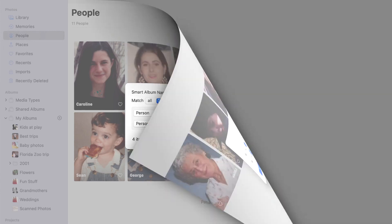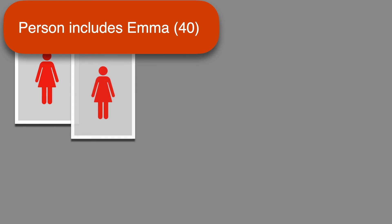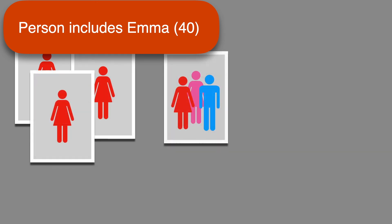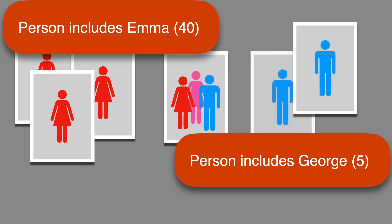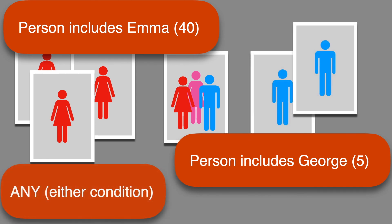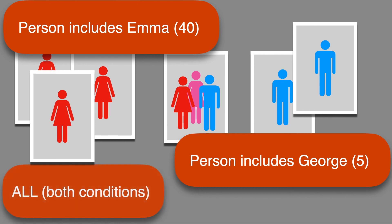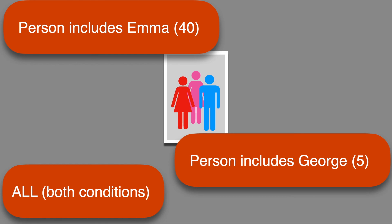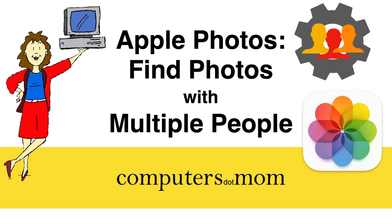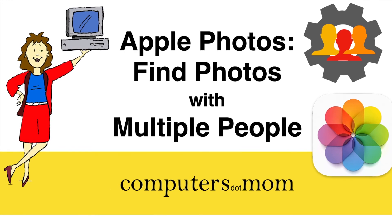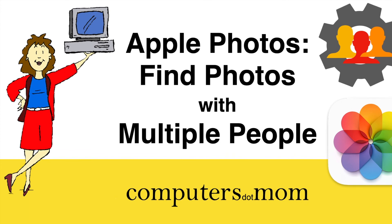Here's another way to visualize "any" versus "all." The first condition Person Includes Emma finds every photo that Emma appears in; the second condition finds every photo that George appears in. If we set the Smart Album to match any of the conditions, it will find all of the photos that have Emma or George or both. But if we tell it to match all conditions, it will only find photos that have both people. That's all there is to it — thanks for watching! Feel free to leave comments and questions below, click Like if you found this helpful, and be sure to subscribe for more Computers.Mom videos.